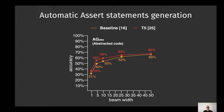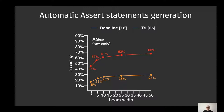Switching to the automatic assert statement generation task: when the code is abstracted, there is still an improvement that the T5 model is able to convey, but it is not that high. Instead, when we consider the raw code, where the tokens are not abstracted, the T5 model is able to get a very large improvement over the baseline.